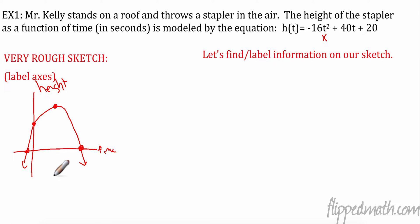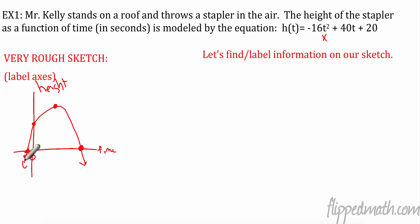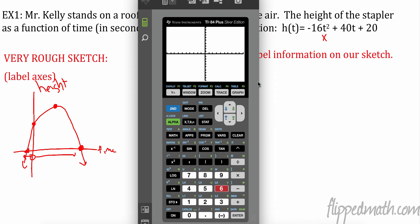Time zero is at the y-intercept. We're not going back in time, so we don't care about negative time values. But these intercept points are interesting and findable. We can find these with the help of our calculator.